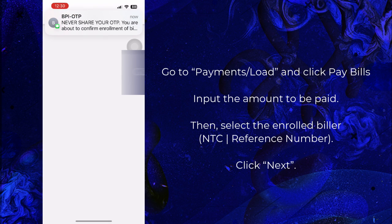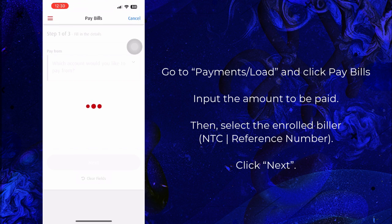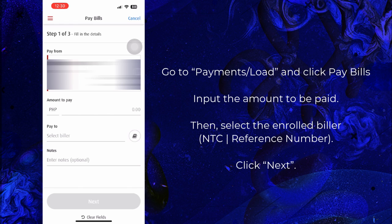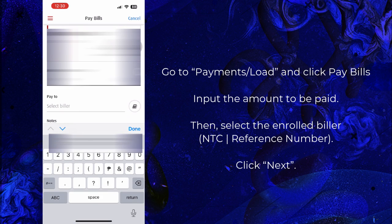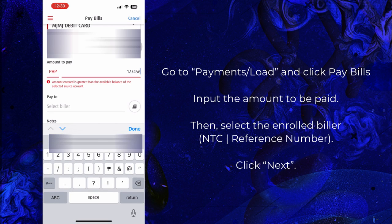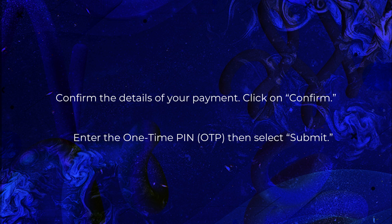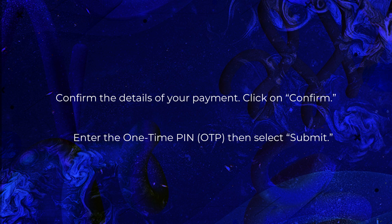Go to Payments or Load and input the amount to be paid. Then select the enrolled biller, which is NTC plus the reference number, and click Next. Confirm the details of your payment and click Confirm. Enter the one-time password (OTP), then select Submit.